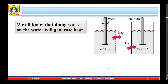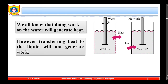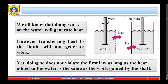We all know that doing work on water will generate heat — if a shaft is rotating, it converts into heat. However, transferring heat to liquid will not generate work. Whether this heat supplied to the water will be able to rotate the shaft — there will be no work. So the reverse process is not possible. Doing so does not violate the first law as long as the heat added to the water equals the work gained by the shaft, but this process is not possible spontaneously.